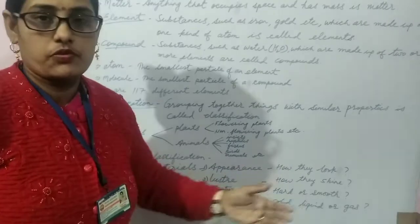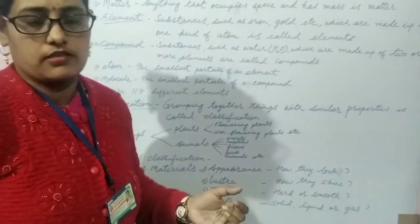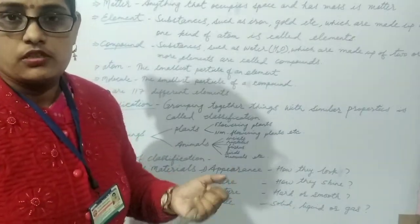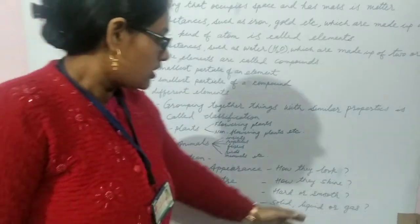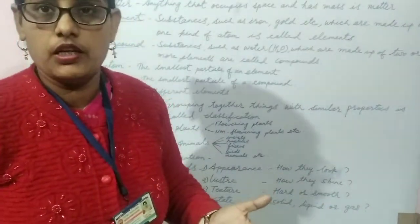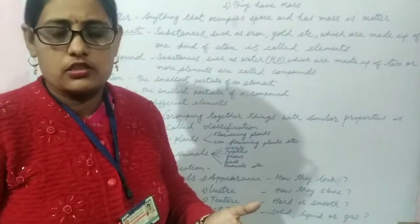And the fourth criteria is state. Materials can be classified on the basis of the state. There are three different types of state of materials. Solid, liquid and gases. For example, solid, wood, stone, etc. are solid objects. Liquid, water, milk, oil, etc. are liquid. And oxygen, hydrogen, these all are gases.